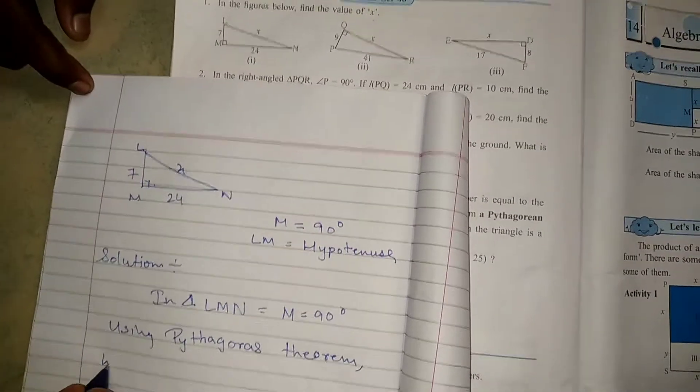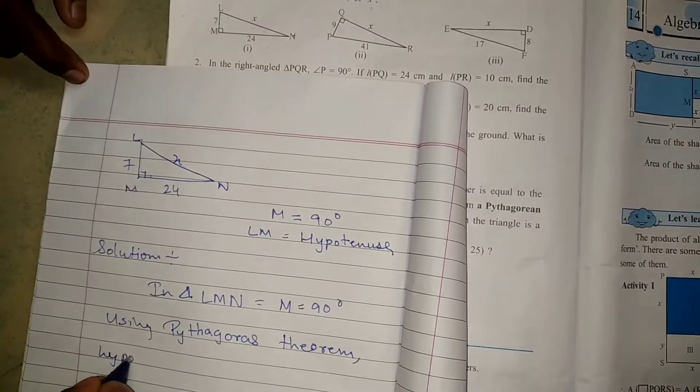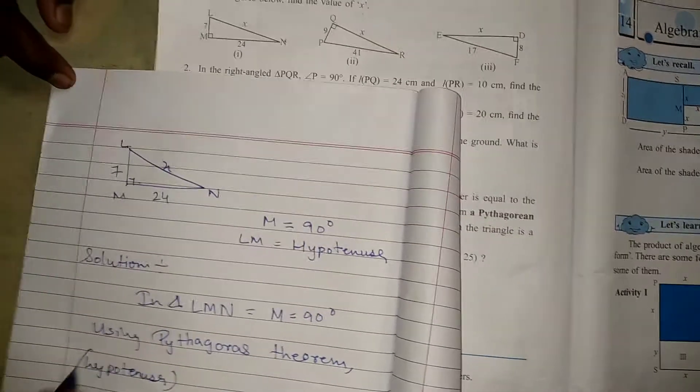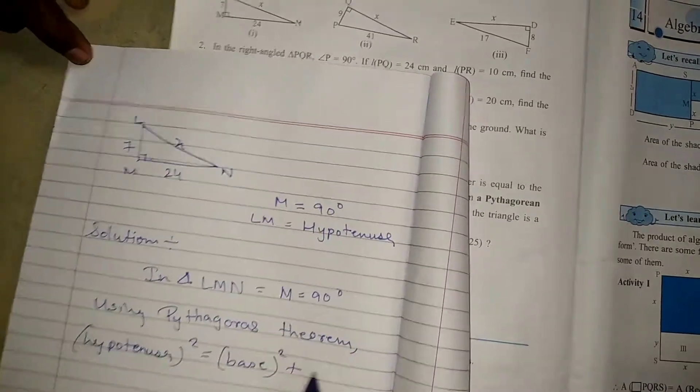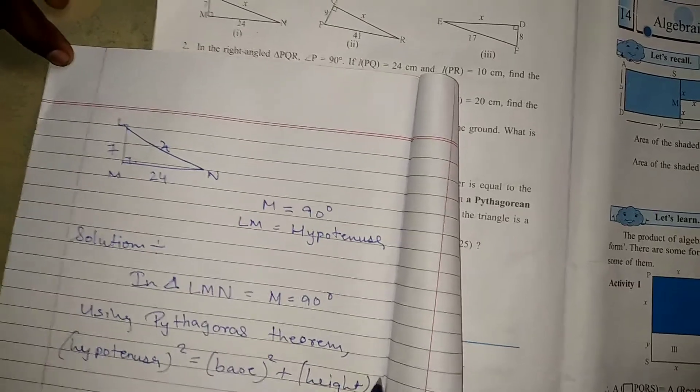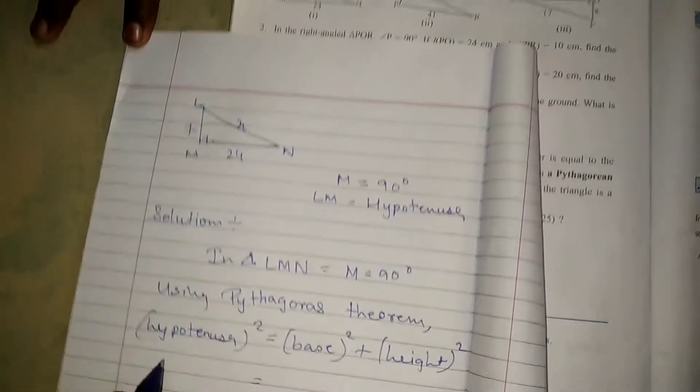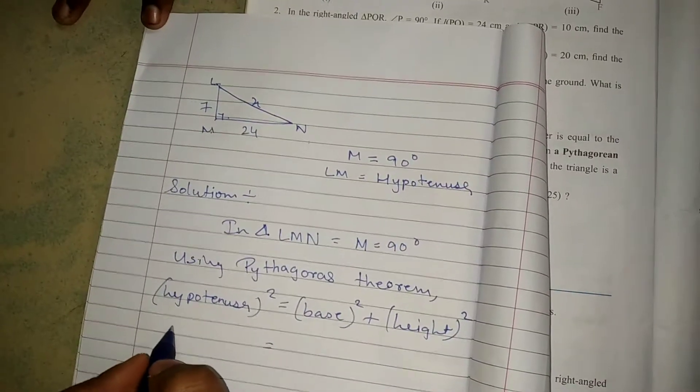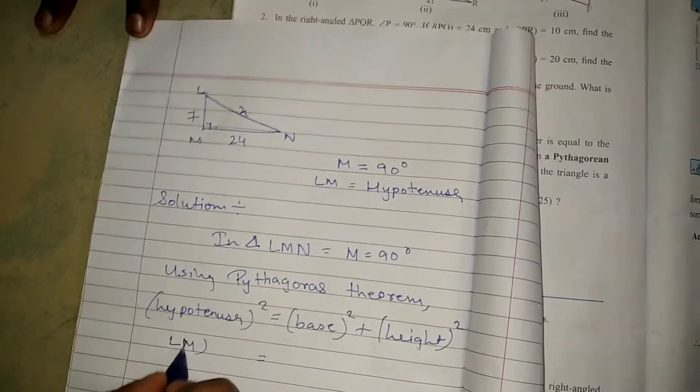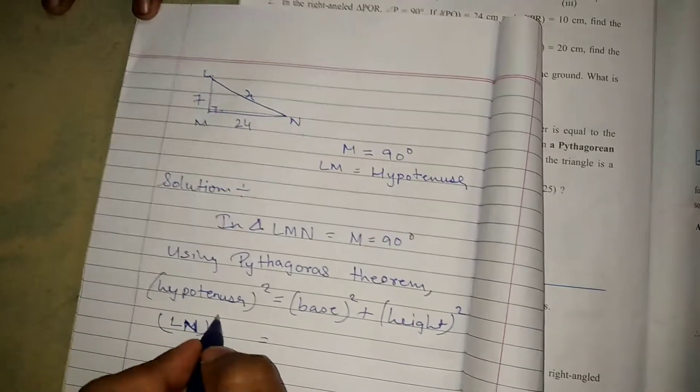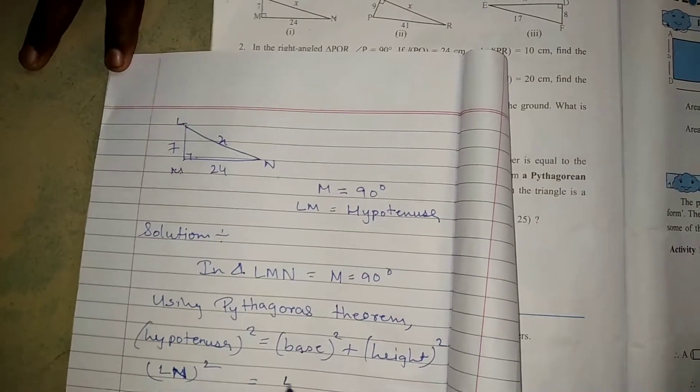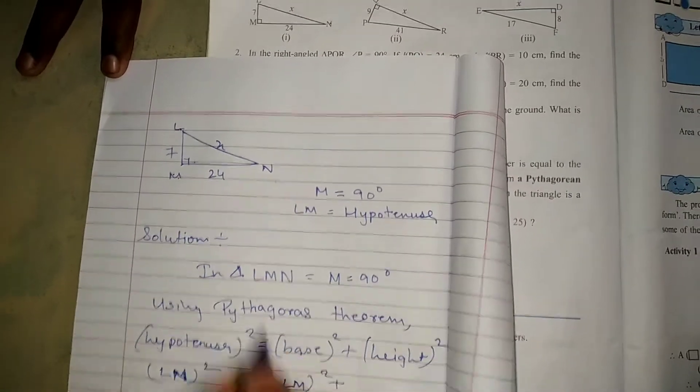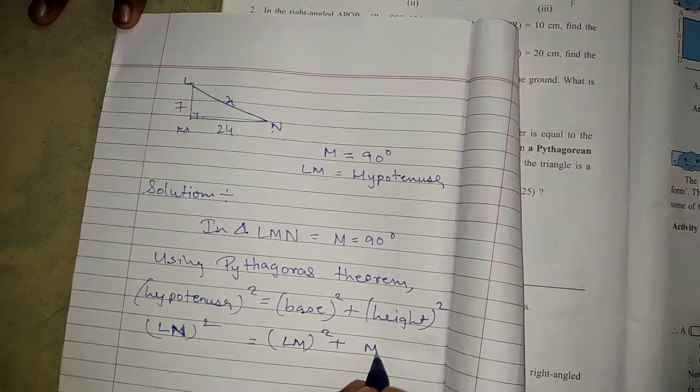First you have to write the formula here. What is your formula? Hypotenuse square equals base square plus height square. What is the hypotenuse side? LM. LM is your hypotenuse side. So I will write your hypotenuse side square. The base is ML, and height is your MN.